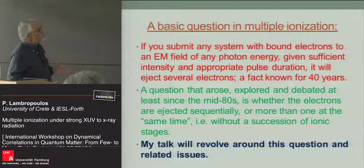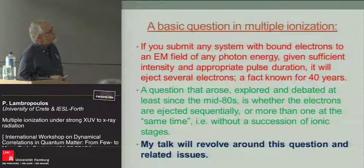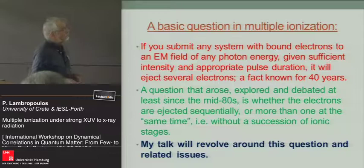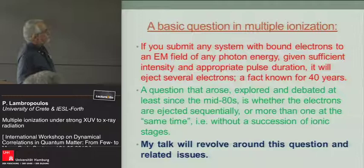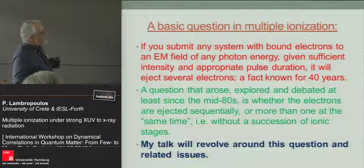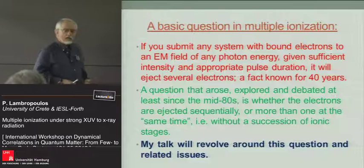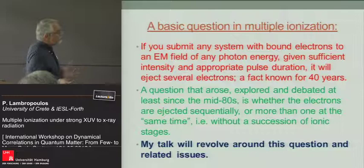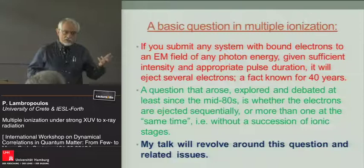If you submit any bound system to strong radiation, you will have ionization. And depending on the pulse duration, intensity, and so on, you will have multiple ionization. This has been known for 40 years or more. A question that arose from the very beginning was whether the electrons that come out of a bound system come out one at a time — in a succession: neutral to ion, ion to double ion, and so on — or whether there is a possibility by which several electrons go out together.